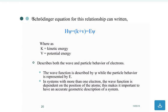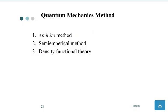The wave function describes both the wave and particle behavior of electrons. The wave function is described by Ψ while the particle behavior is represented by E. In systems with more than one electron, the wave function is dependent on the position of atoms. This makes it important to have an accurate geometric description of the system.